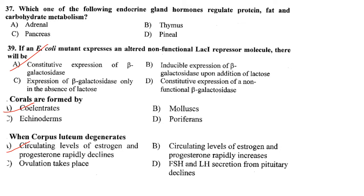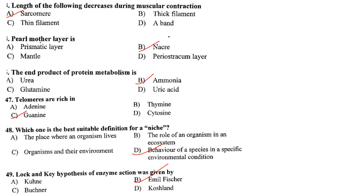Corals are formed by cnidarians. When corpus luteum degenerates, the circulating level of estrogen and progesterone rapidly declines. Answer is option A. Regarding muscle contraction, the length of the sarcomere decreases during muscle contraction.